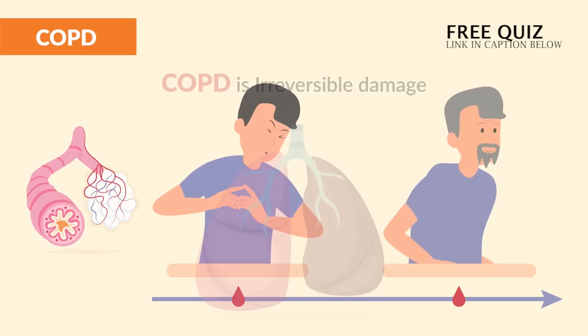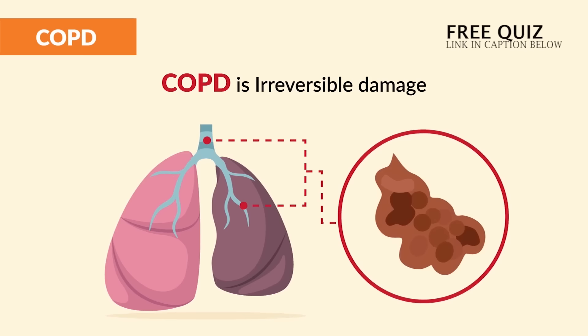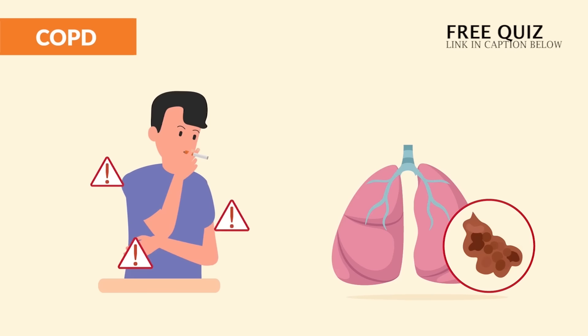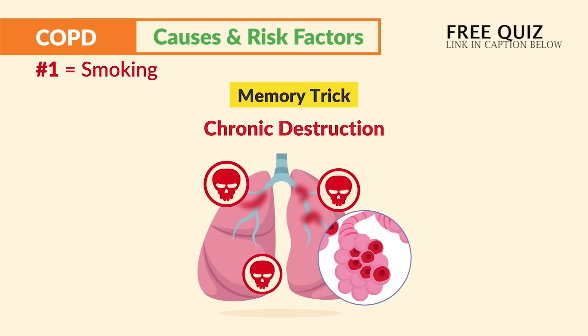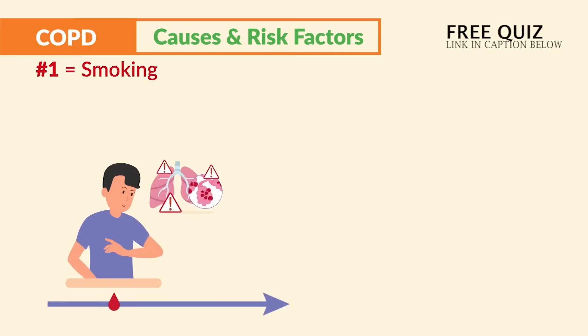COPD is not asthma. The big difference is that asthma attacks are reversible — they're momentary flare-ups that come and go and usually resolve with age. COPD is irreversible damage to the alveoli and the bronchi of the lungs that progresses over a number of years, typically caused by smoking. The number one cause and risk factor is smoking — the number one primary risk factor on the NCLEX and most nursing exams.